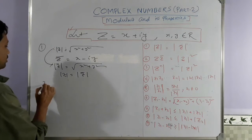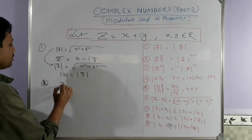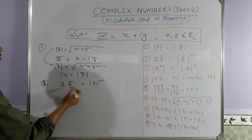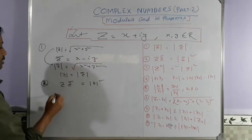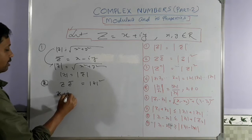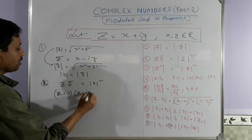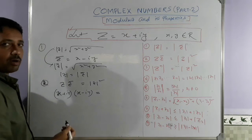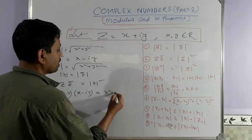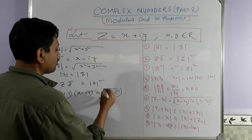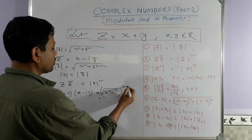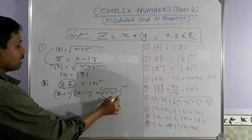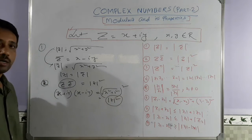Property 2: z·z̄ = |z|². To derive this: z = x + iy and z̄ = x - iy. Following the product rule of complex numbers, you get x² + y², which equals (√(x² + y²))². So z·z̄ = |z|². This is an important property.